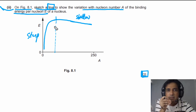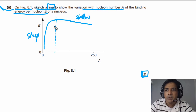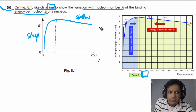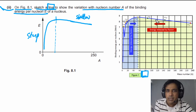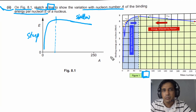The simplified curve earns two marks. The actual binding energy per nucleon against mass number curve is different — it has some spikes — but for this question you do not need to draw those spikes. Simply drawing one continuous curve is sufficient.